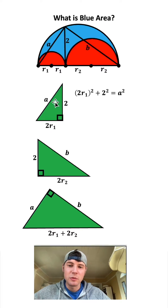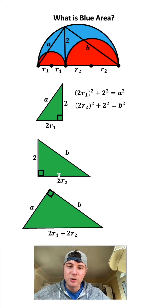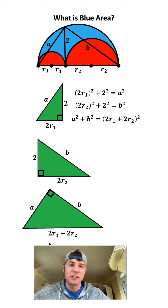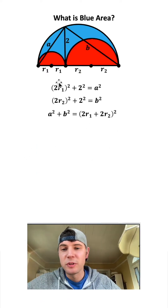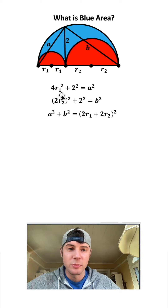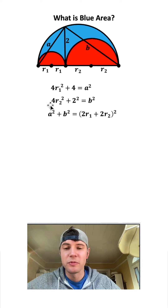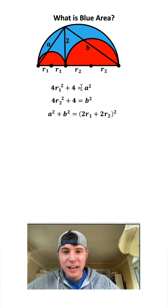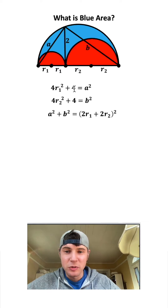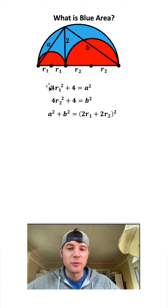All three of these are right triangles, so we can use the Pythagorean theorem. First: leg² + leg² = hypotenuse². Same for the second triangle, and same for the third. These three equations came from these three triangles. When we expand, the squared distributes: we get 4r₁² and 4 for the first, 4r₂² and 4 for the second, and we have an a² here and an a² here. I'm going to substitute into the first a².